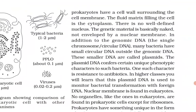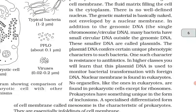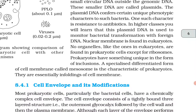All prokaryotes have a cell wall surrounding the cell membrane. The fluid matrix filling the cell is the cytoplasm. There is no well-defined nucleus — the genetic material is basically naked and not enveloped by a nuclear membrane. In addition to the genomic DNA (single chromosome or circular DNA), many bacteria have small circular DNA outside the genomic DNA called plasmids. Plasmid DNA confers certain unique phenotypic characters to such bacteria, one such character being resistance to antibiotics.